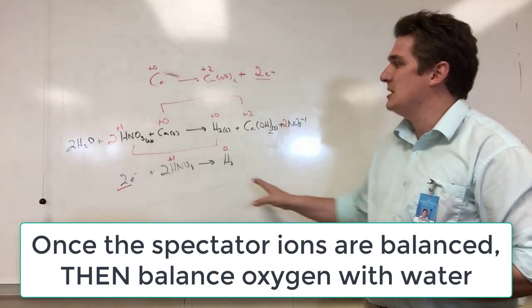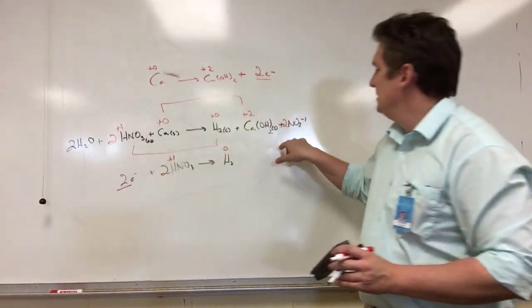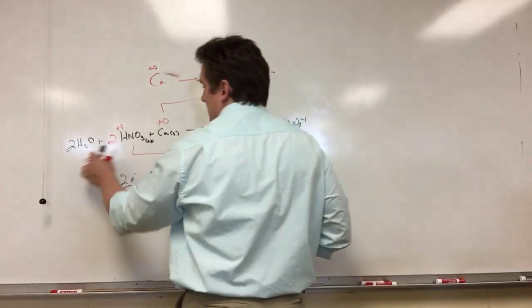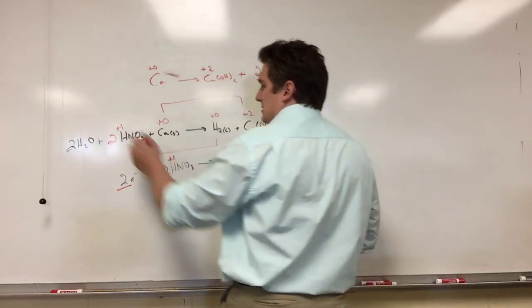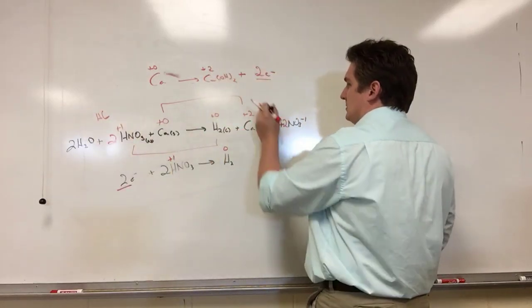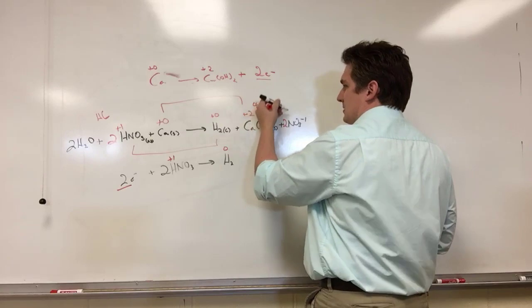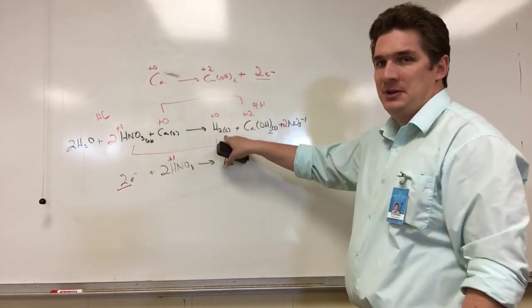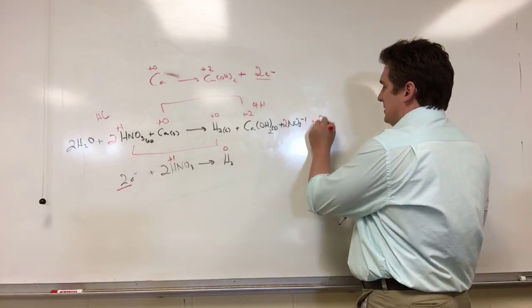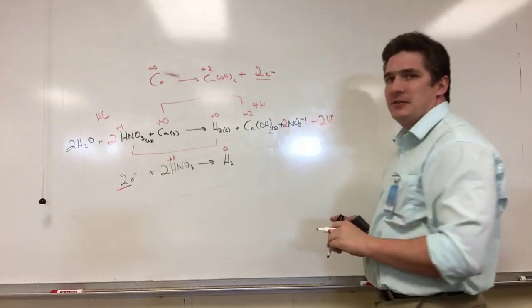Now we need to balance out the hydrogens. We've got four—two will give us six on the other side. We've got two, we've got four hydrogens—two from here, two from here—which means we need two more hydrogens to balance it out on this side.